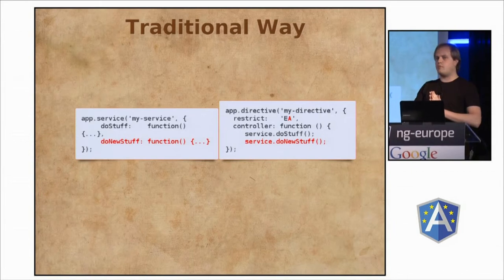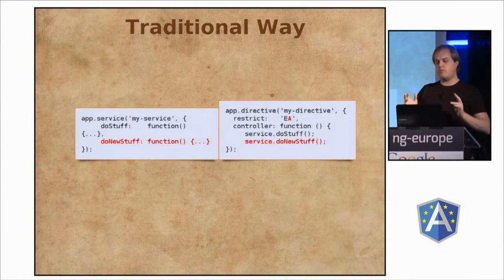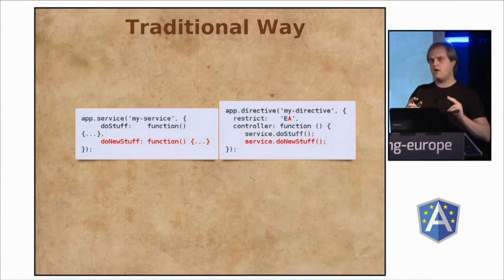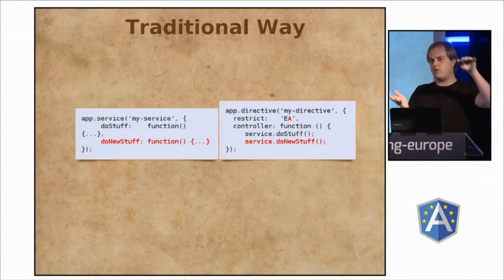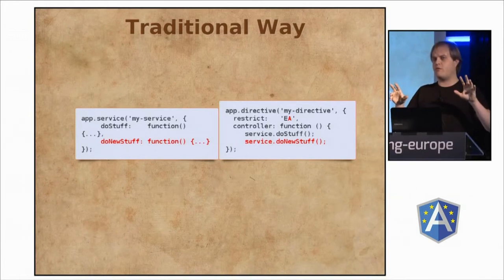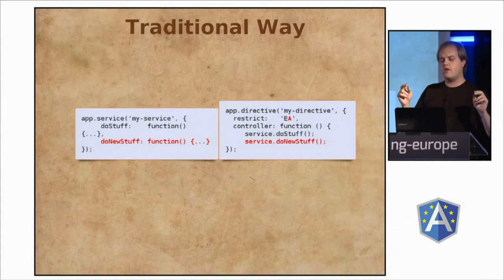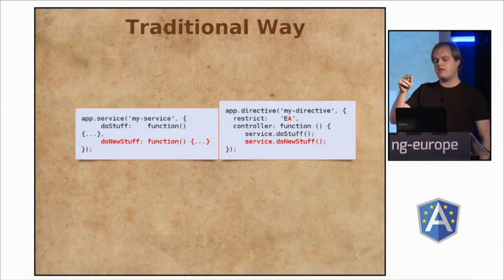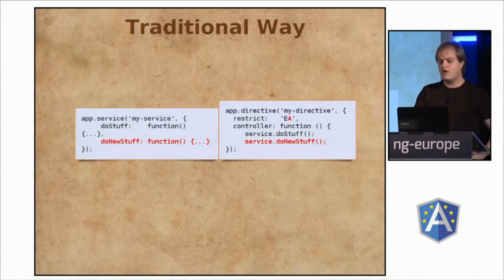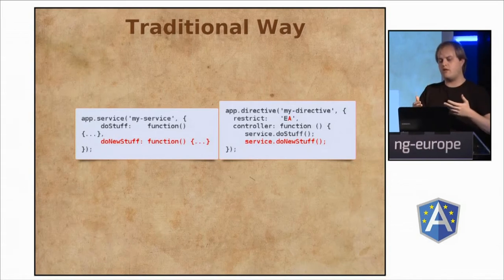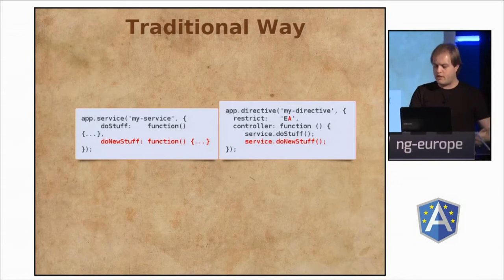It's about feature-based programming. If you implement a feature in your software, usually there's not one single place where you could put all the code for that feature. It's usually spread around quite a bit. This is a very simplistic example where you add a do-new-stuff function to the service, add an attribute restriction, and call the new function inside the controller of that directive. Like there are three different places, and different features get mixed up and spread around. This is basically the cross-cutting concerns.